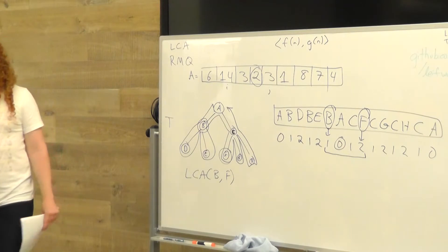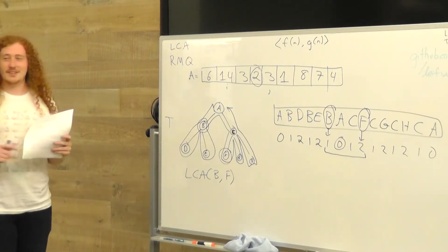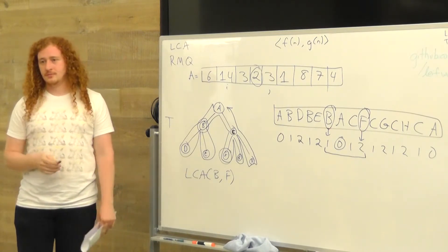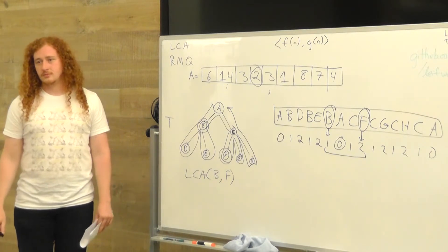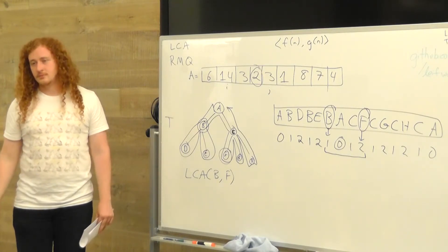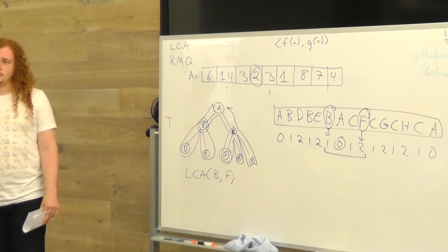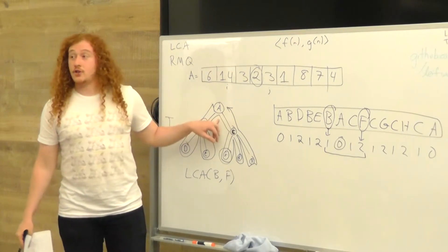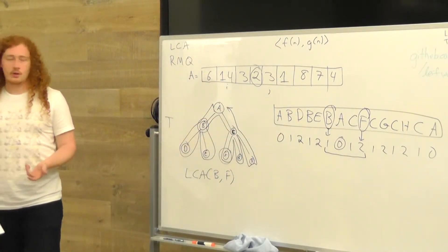Does that work for any selection of nodes? Yes — because of the Euler Tour. The lowest common ancestor will always be higher up, always between the two nodes because you're going in order by depth. The node that actually is the lowest common ancestor will always appear between any two appearances of your query nodes in the Euler Tour. B appears three times, but whichever one I pick, A is between B and F.